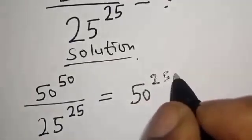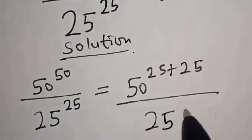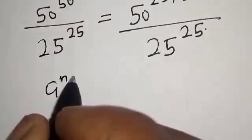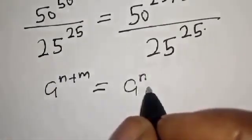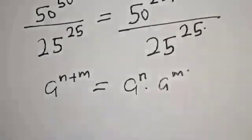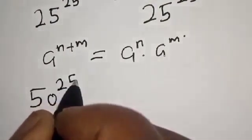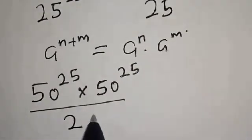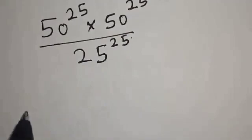50 raised to power 25 plus 25 over 25 raised to power 25. Then we apply the rule: if you have a raised to power n plus m, this is a raised to power n multiplied by a raised to power m. So we have 50 raised to power 25 multiplied by 50 raised to power 25, over 25 raised to power 25.